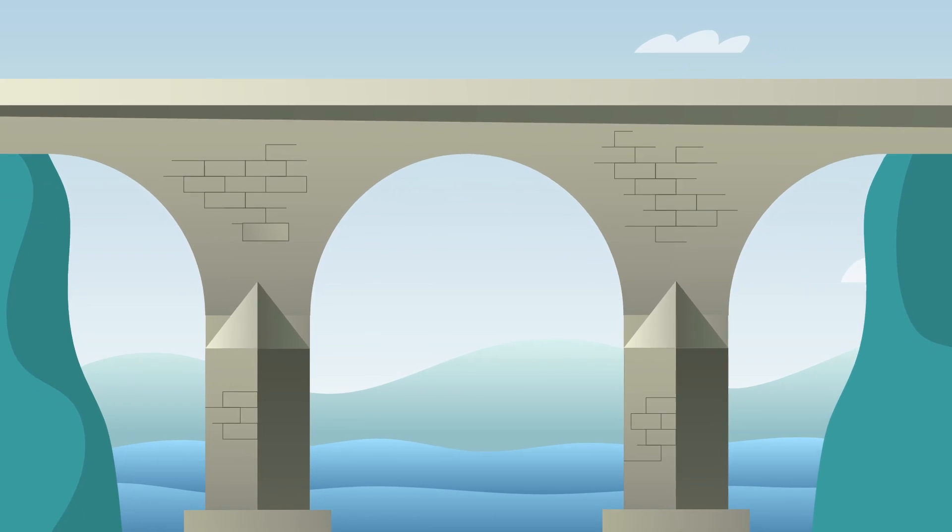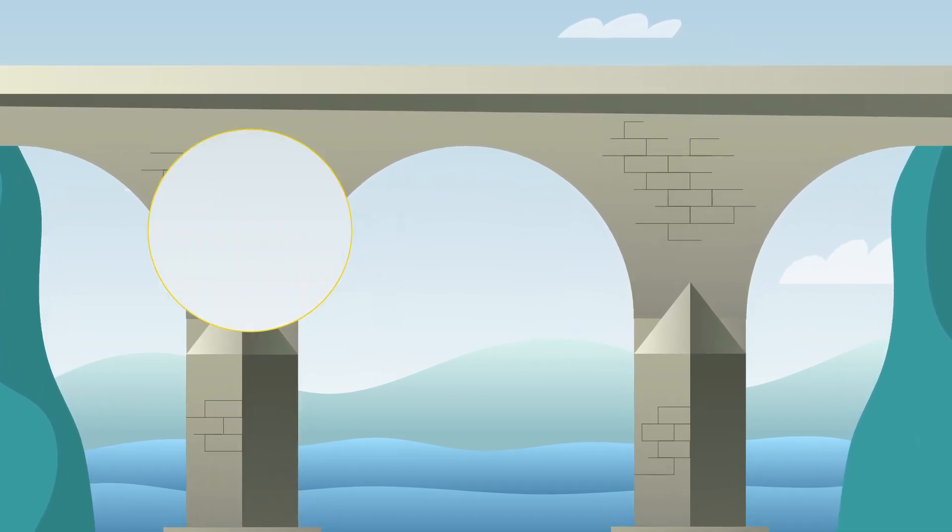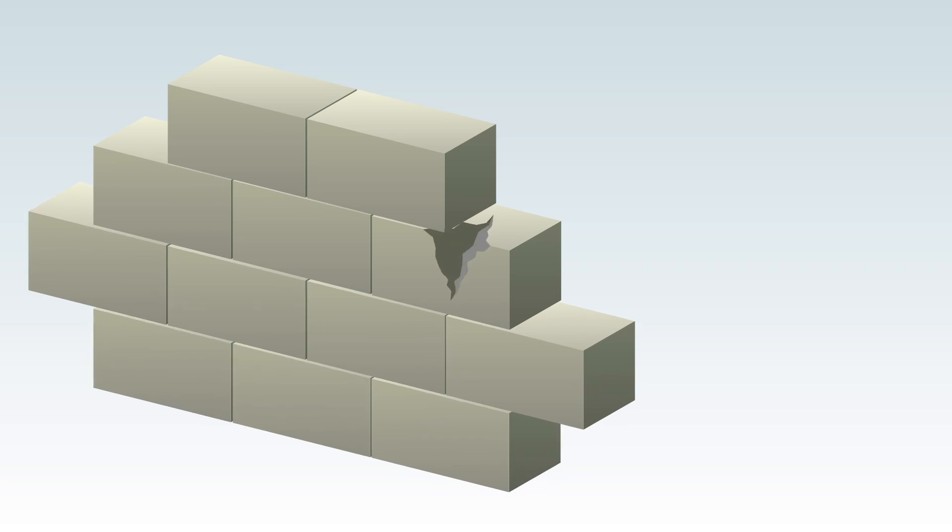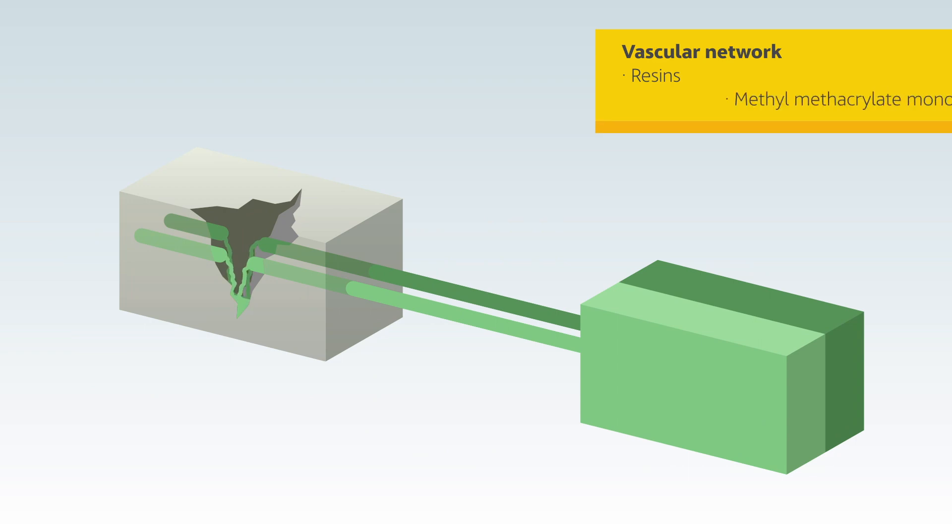Scientists are working on new types of self-healing concrete. So far, it has been based on chemical reactions with inert materials, like this network of tiny tubes that, when broken, release substances such as resins or monomers.